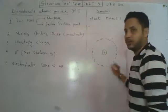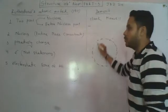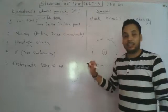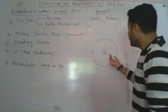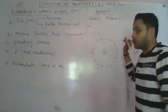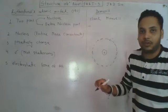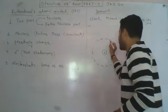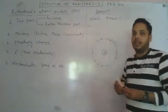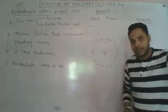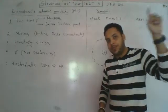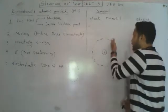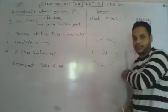Electrons move around the nucleus in a circular path. The idea is that the planets are moving around the sun — similarly, electrons are moving around the nucleus.